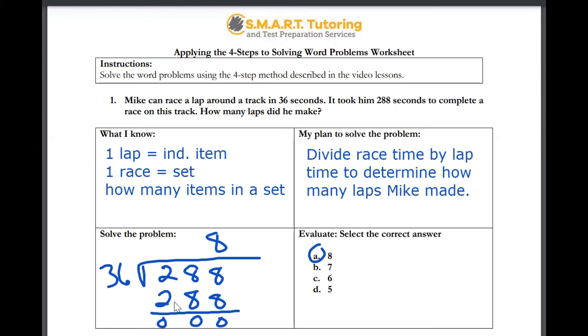The first step to solving this word problem is to identify what you know. One lap equals one individual item. One race equals one set. The question is asking you how many items are in a set.